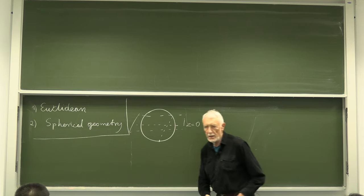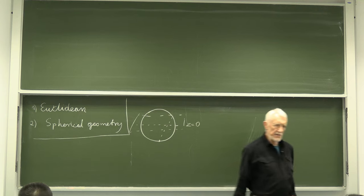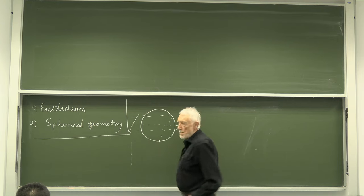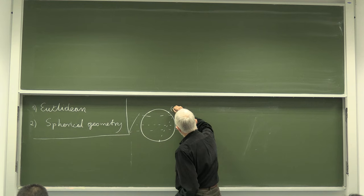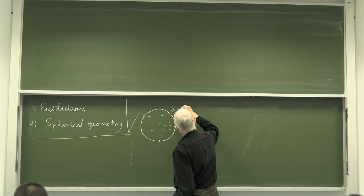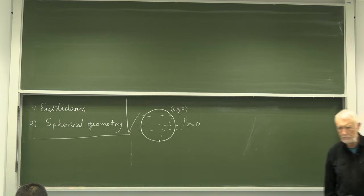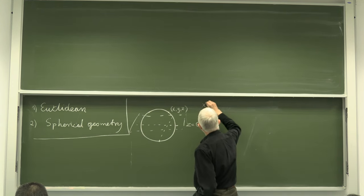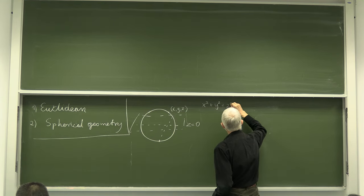Let this be just a unit sphere, so points of that sphere are described by Cartesian coordinates which fulfill the equation of the sphere: x² + y² + z² = 1.